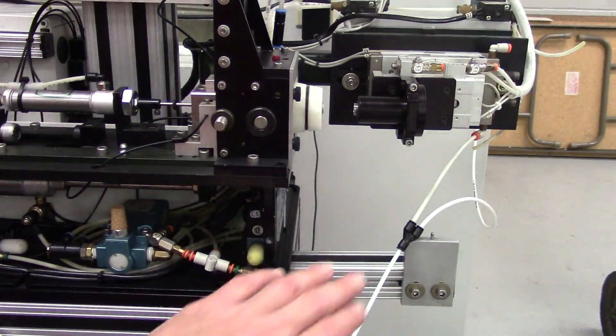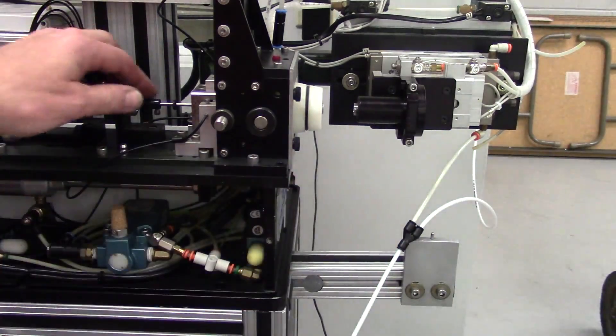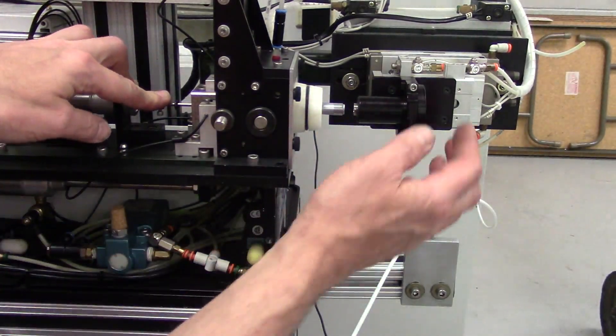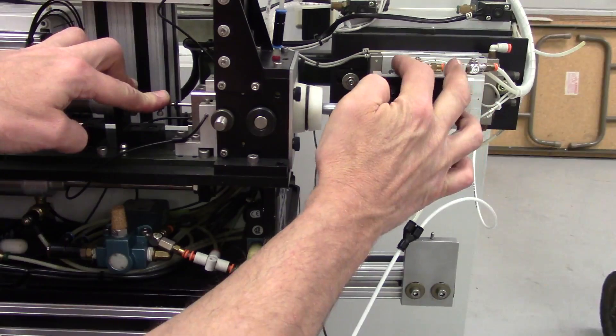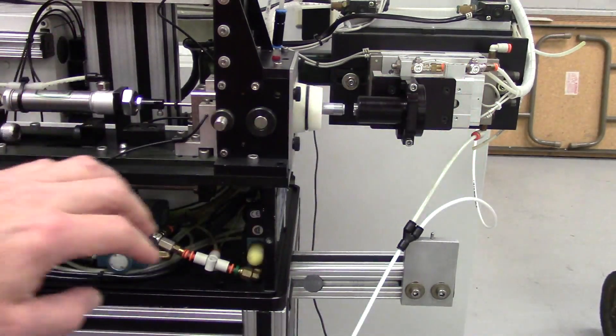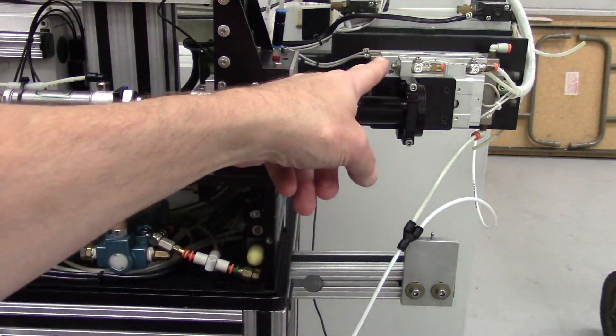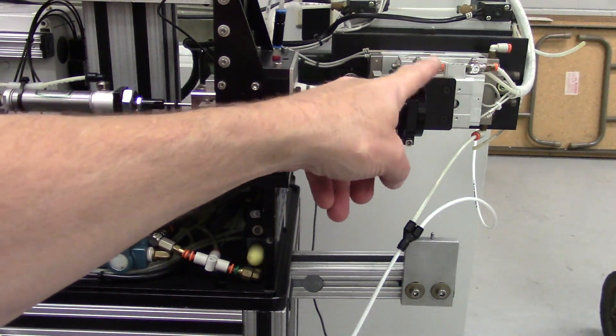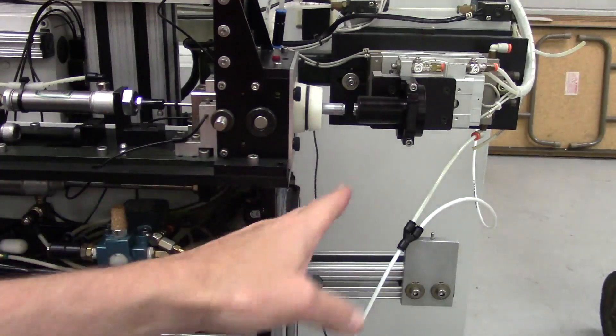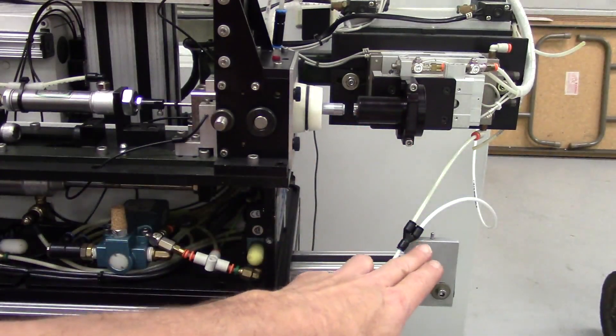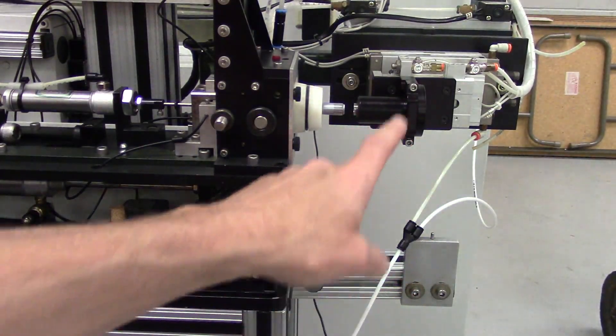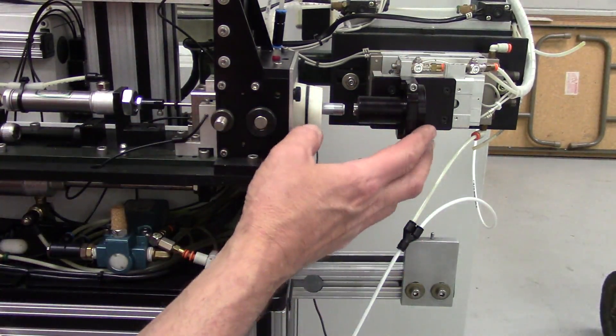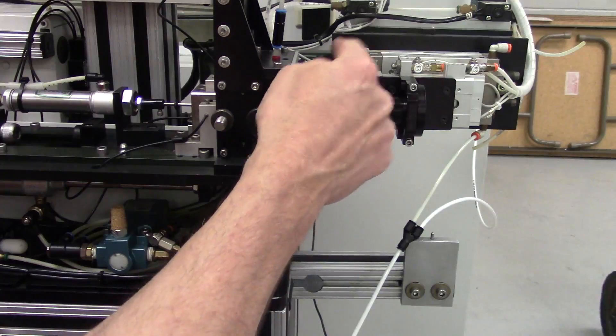Now we have our mandrel in here, this is fixed, we've got our stroke set. Most of our small cylinders like this are set at inch and a half, so if your height is not critical then you could just set your stroke at inch and a half and that should work out fine.